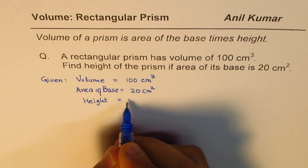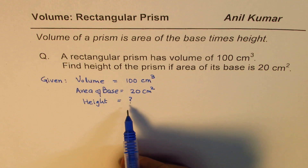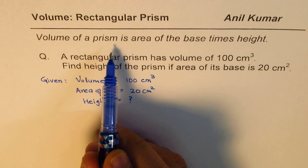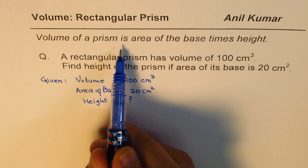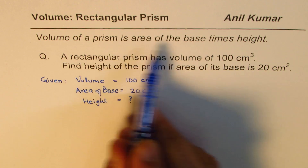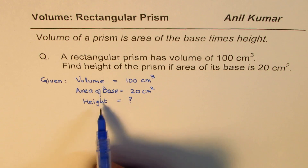We do not know the height — that is what we need to find. That is how we can understand the question. Now, how do we find height? We know volume of a prism is area of base times height. That is the relation between volume, area, and height.